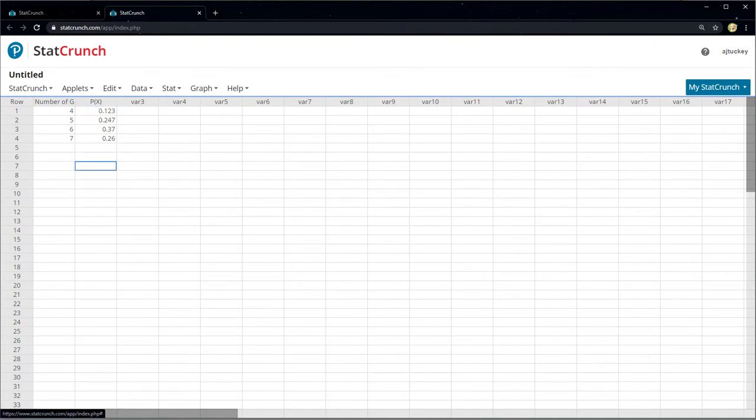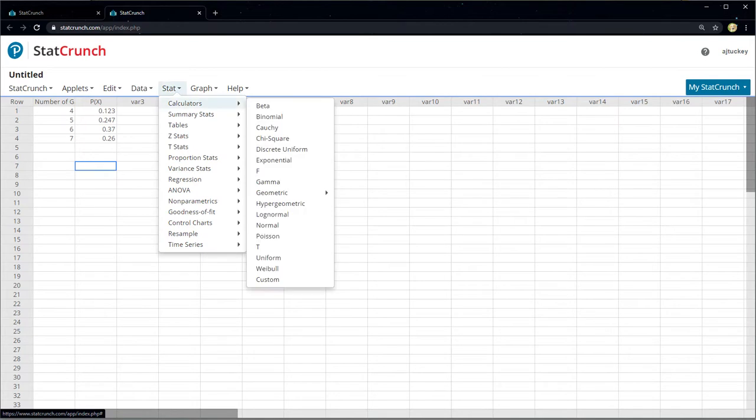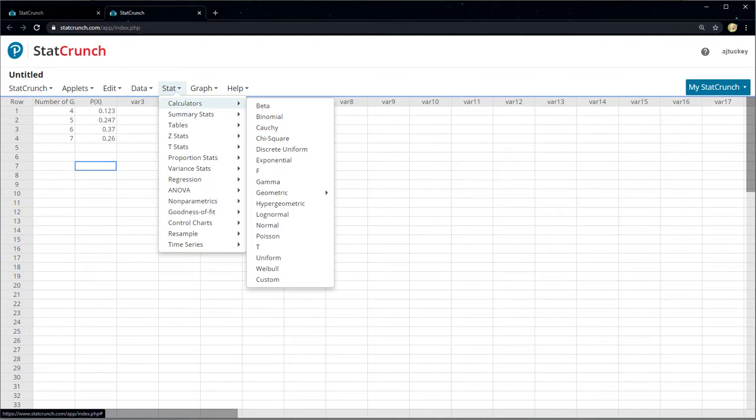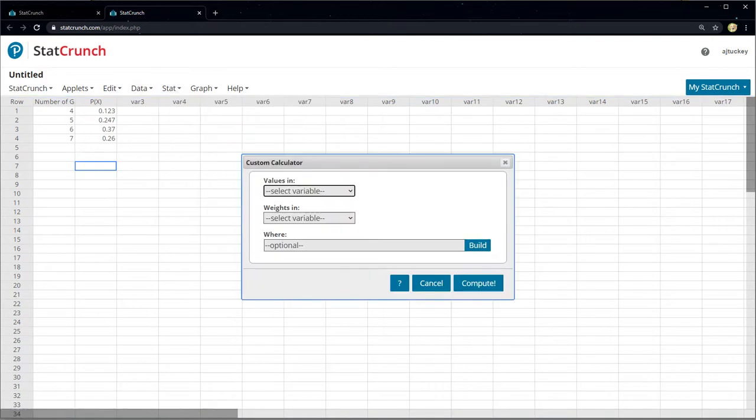Now we go to STAT, we go to CALCULATORS. So we're not going to do Summary Stat, which is what we did back in Section 3.3. We did Summary Stat and Grouped, but now Grouped won't work because P(X) are decimals. So in Section 6.1, you're going to have to use the Calculators, and then Custom down below. So you're going to use the Custom Calculator. So the very, very bottom of the Calculator menu is Custom.